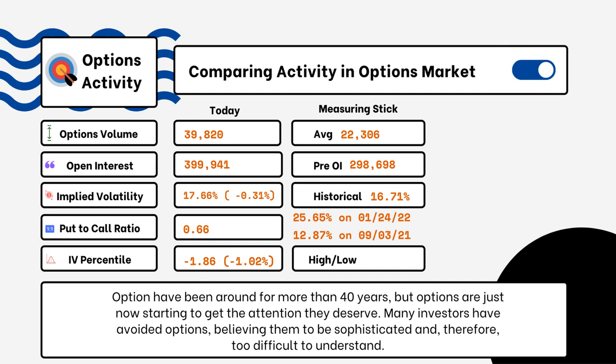We've provided details on today's option activity — you'll be able to see options volume, open interest, implied volatility, put-to-call ratio, and IV percentile. One of the most popular indicators for traders is the put-to-call ratio. Anything above 1 tells us there is more bearish sentiment in the market rather than bullish. A reading of around 0.5 or 0.7 tells us it's more bullish than bearish, indicating more calls are being purchased rather than puts.